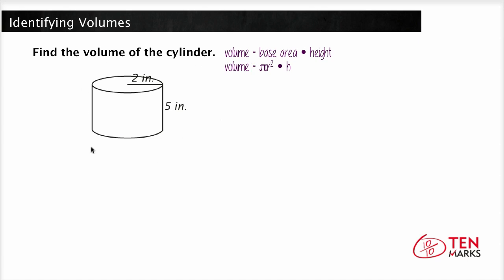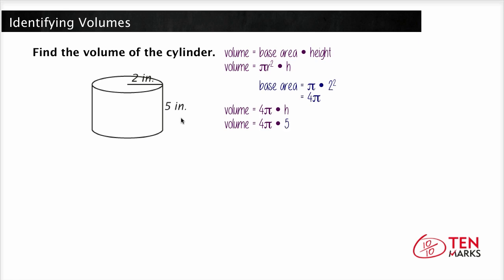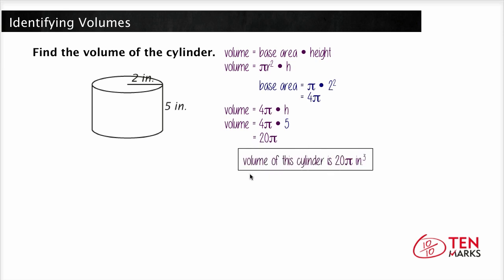In order to find the volume of this cylinder, we first need to find the base area. We know the radius is 2 inches, so the base area is pi times 2 squared. 2 squared is 4, and we substitute this back into our volume formula, so we have volume equals 4 pi times h. Our height is 5 inches, so volume equals 4 pi times 5, which gives us 20 pi. Since volume is in 3 dimensions — length, width, and height — our volume units will always be cubed. So the volume of this cylinder is 20 pi inches cubed.